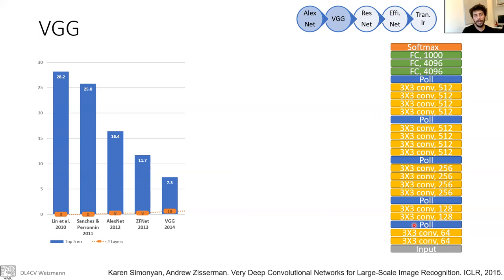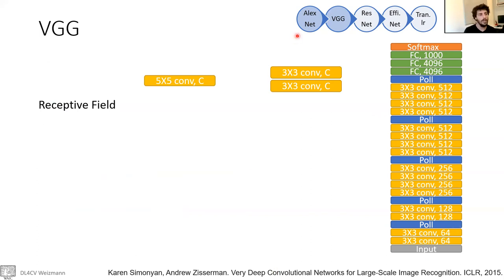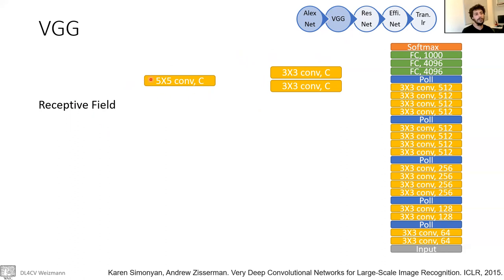There is actually a reason why they used 3×3 convolutions instead of 5×5 or 11×11 convolutions as was done in AlexNet. Let's examine those two options. If we have a 5×5 convolution and compare it to a block with two 3×3 convolutional layers stacked upon each other, we're going to compare those two functions and find out which one is better. What will be the receptive field for the 5×5 convolution?